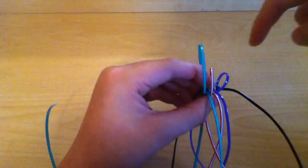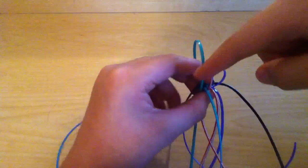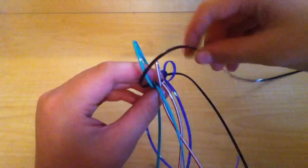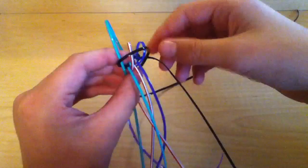Then the one closest to the loop—which is this one, the long string closest to a loop—you're going to bring it across diagonally like that.